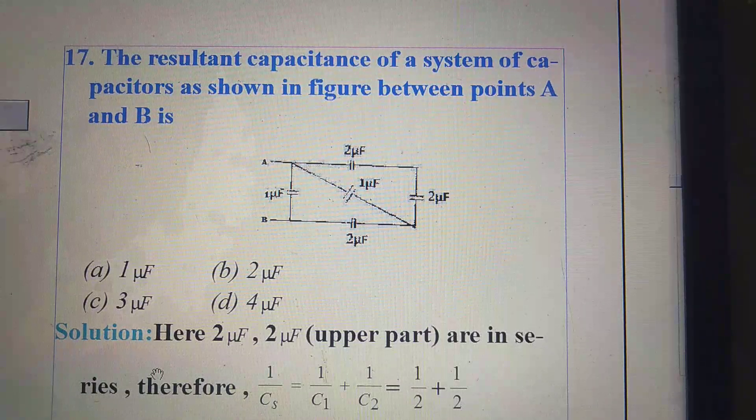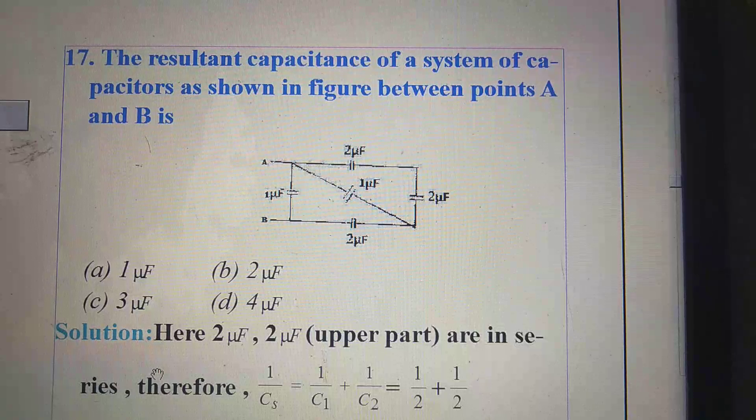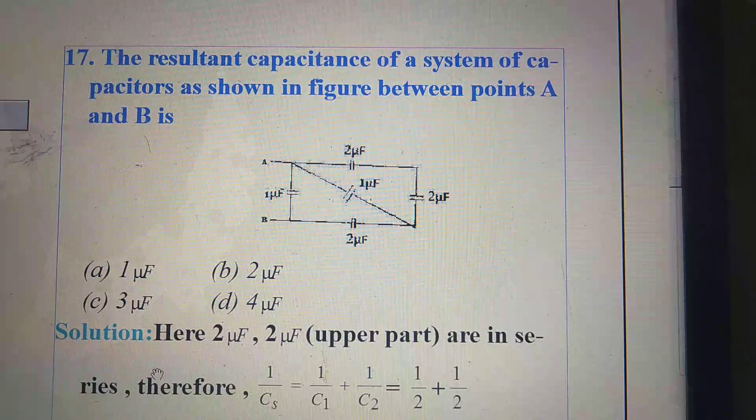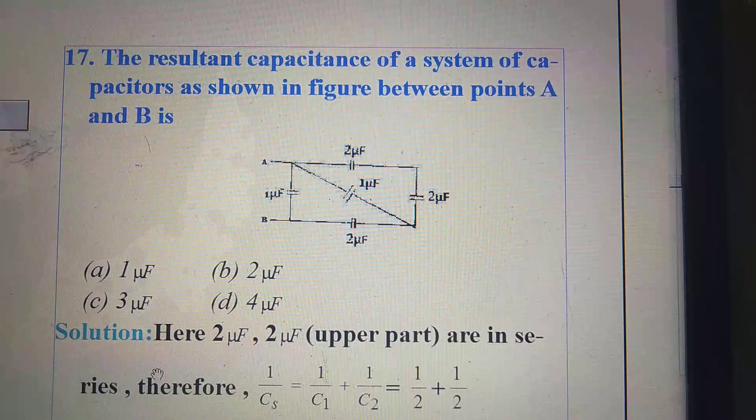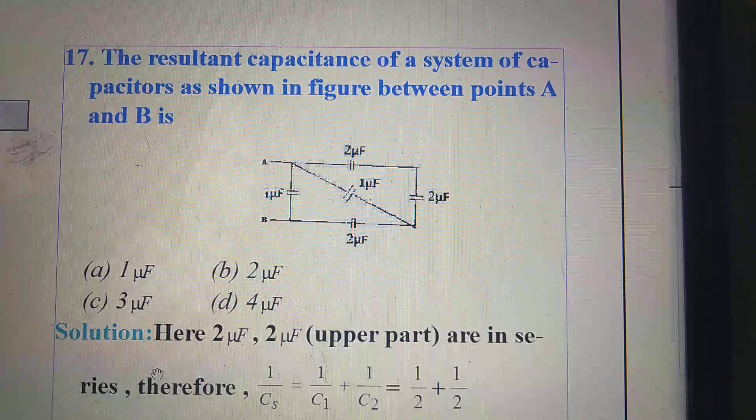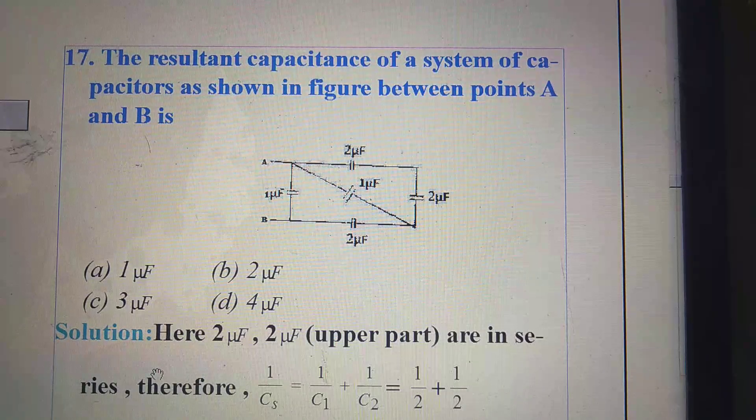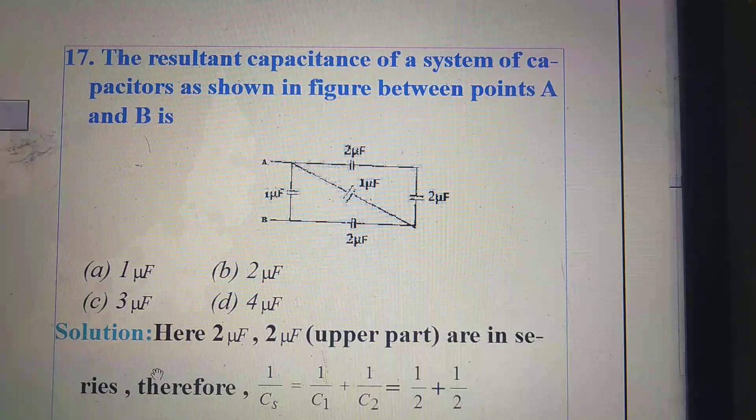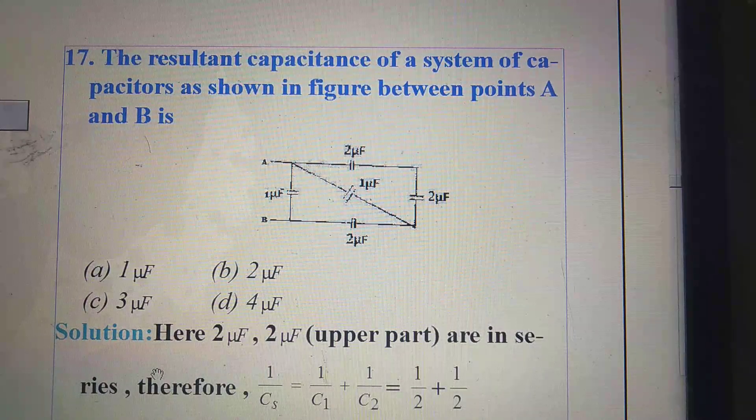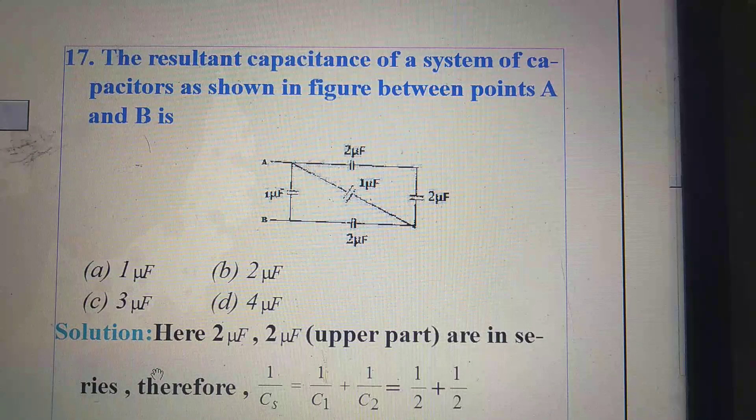The resultant capacitance of a system of capacitors as shown in figure between points A and B. Here, the circuit is given. We have to find out the resultant capacitance in between these two points, that is A and B. Option A, 1 microfarad. Option B, 2 microfarad. Option C, 3 microfarad. Option D, 4 microfarad.